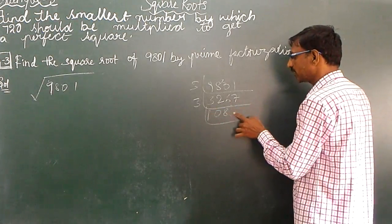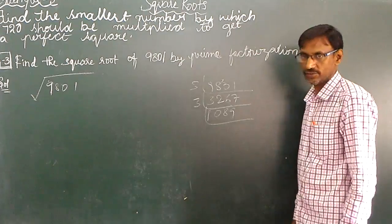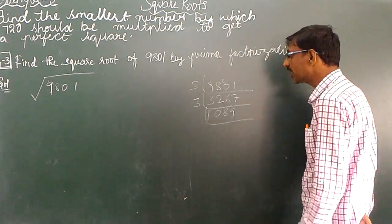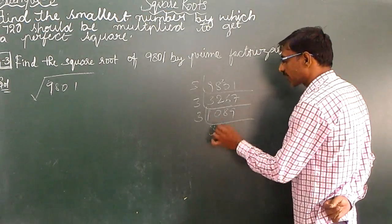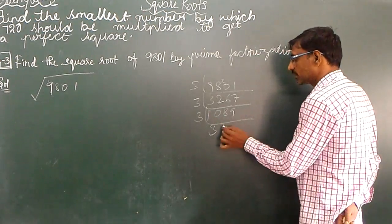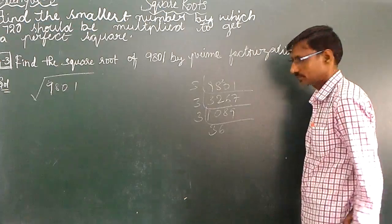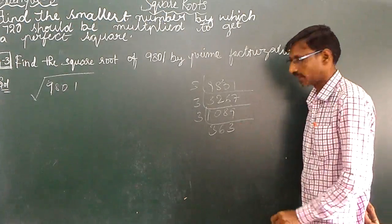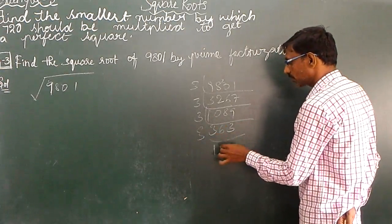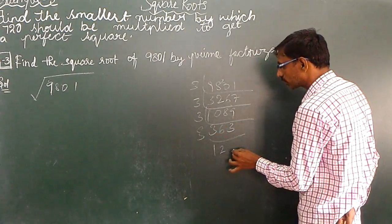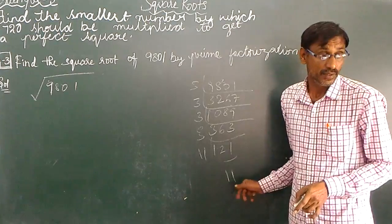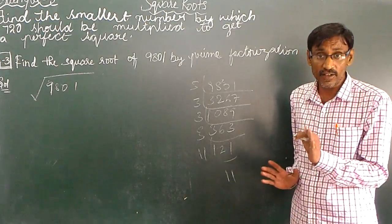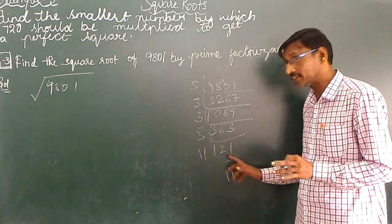3 9 jar. Again 3 table. 3 3 jar, 3 6 jar. Again 3 table. 3 1 jar, 3 2 jar. 11, 11 jar 1. No other number will go. Only 11, 11 jar 1, 21.